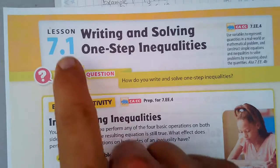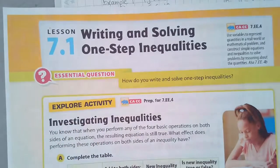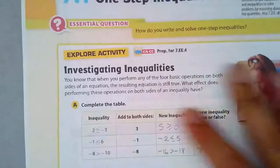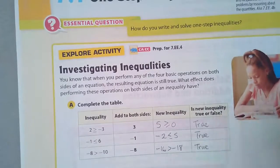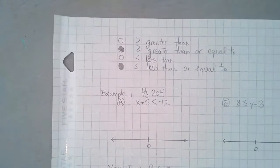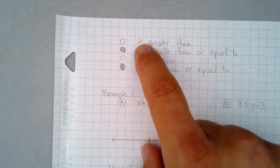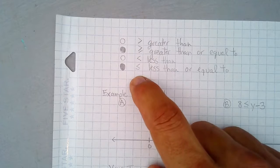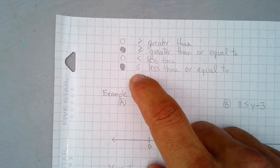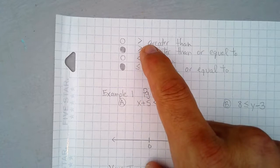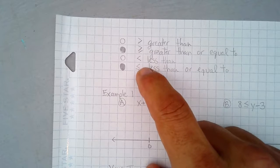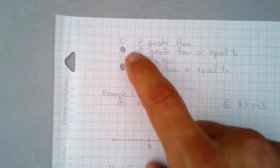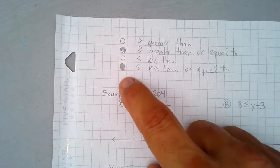Hi and welcome to my Lesson 7.1 on Writing and Solving One-Step Inequalities. I want to return to what an inequality is. We have four different inequality symbols that you've seen in sixth grade: greater than, greater than or equal to, less than, and less than or equal to. And when you graph them, you have open dots and closed dots.